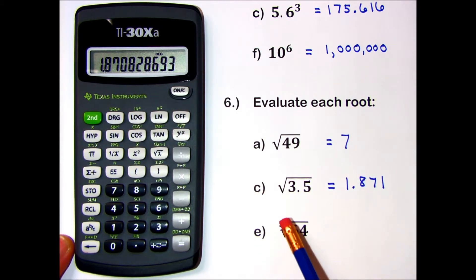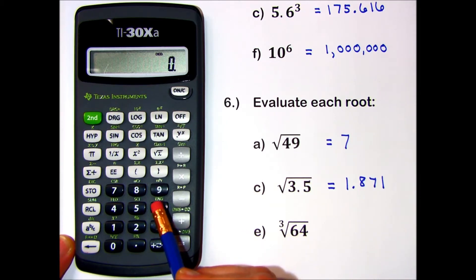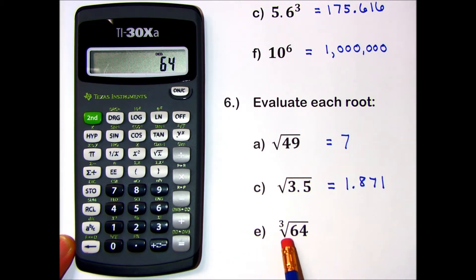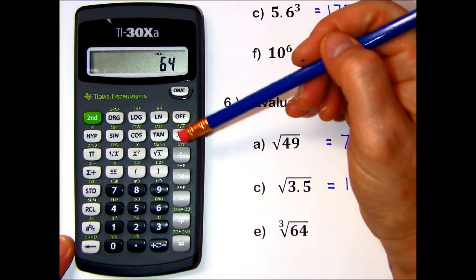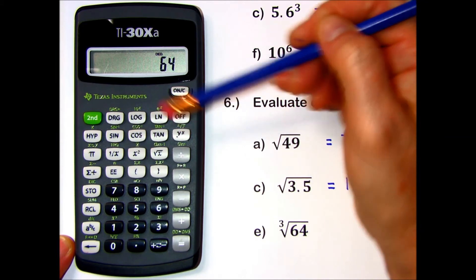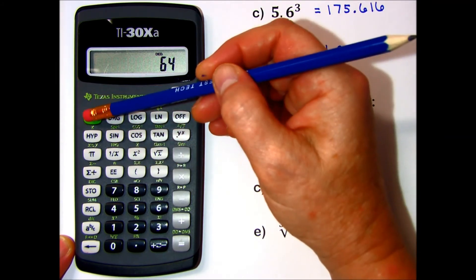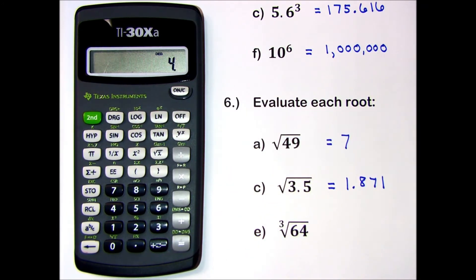And in part E, I need to take a cube root of 64. Here's how I enter this. I enter the number first — called the radicand — inside the root symbol first: 64. Then I say to myself, root 3. I find the root by doing the second function of my exponent key and tap into a variable root, in this case printed just above the key. So I have 64 root 3. When I press equals, I get my answer, which is 4.